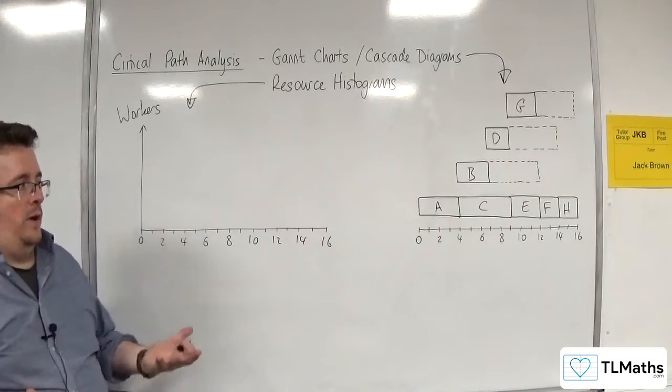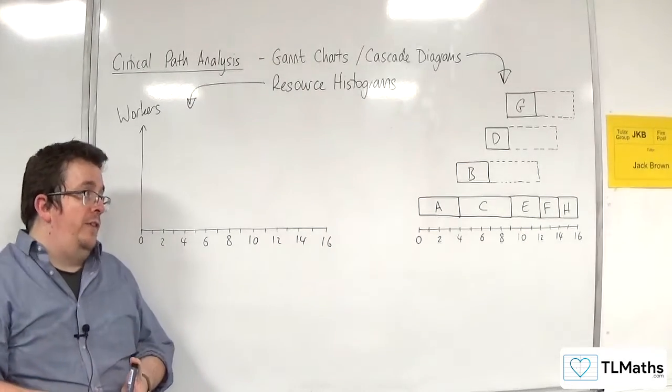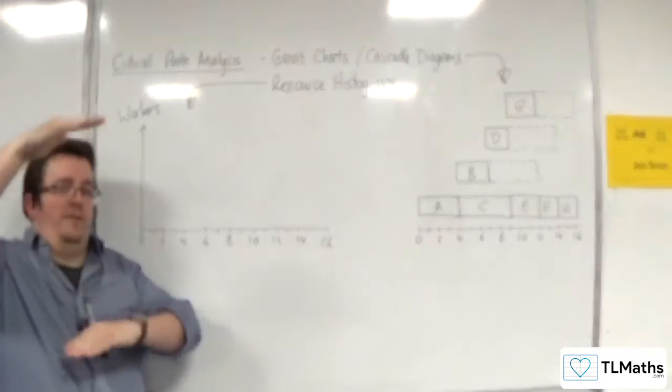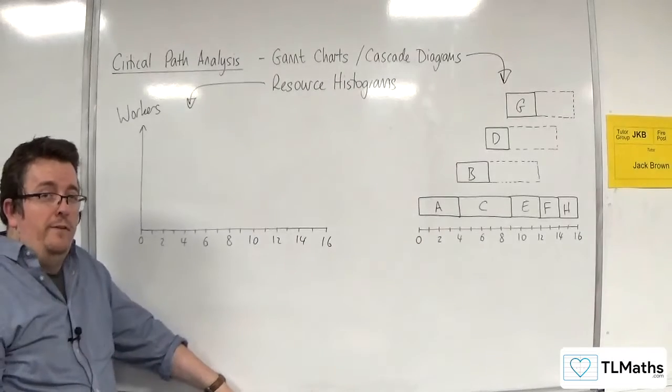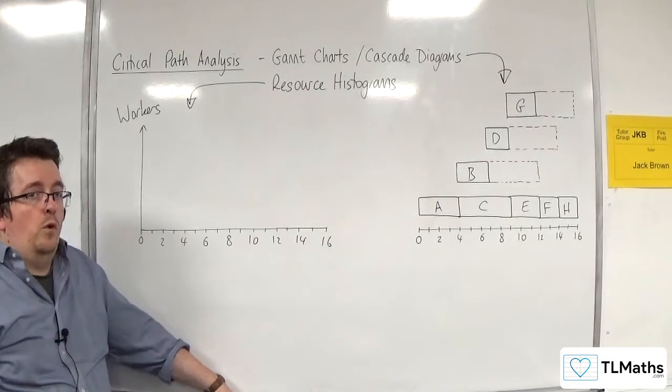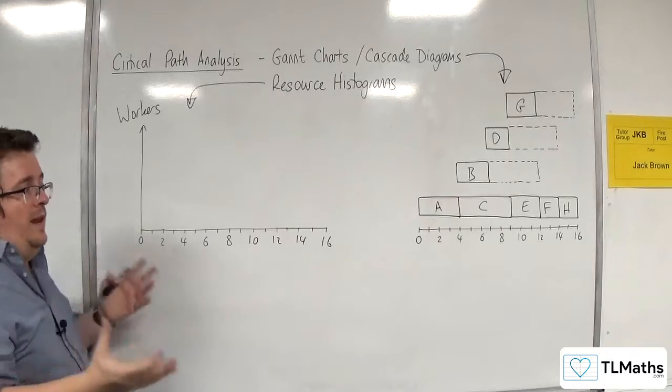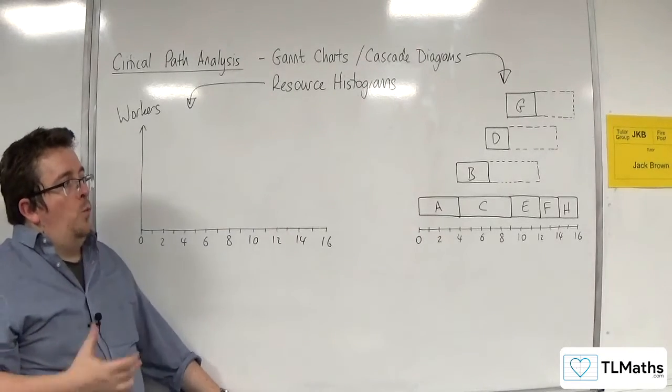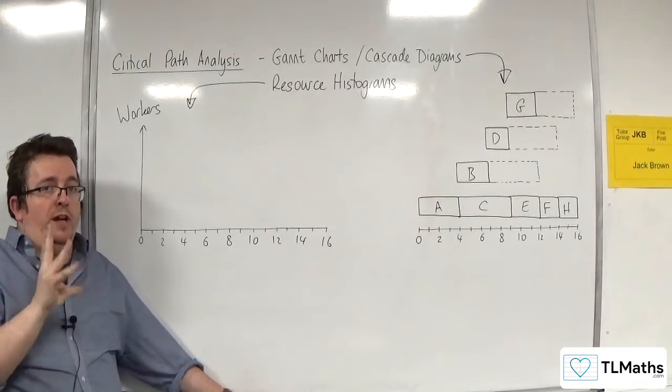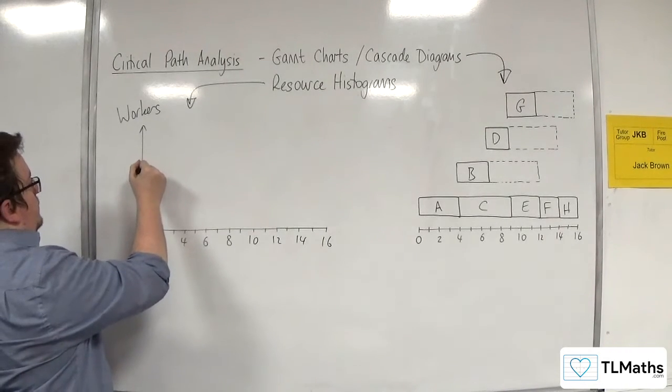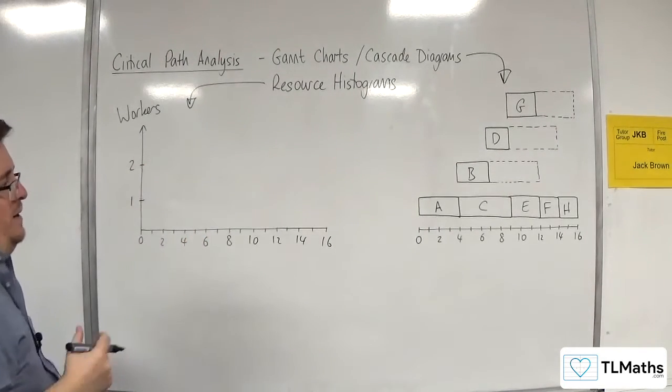Now, what we're going to do in this problem is assume that each activity only requires one worker. If that wasn't the case, then you would have to have boxes that are twice as large if it takes two workers or three workers, etc. So it becomes a bit more of a fiddly problem when certain activities require more than one worker. So I'm going to assume that each activity only takes one worker, and when an activity is done, the worker can move immediately onto the next activity. So there's no changeover time. Let's put that as one worker, pull that up a little bit further, two workers. Let's see if we need any more than that.